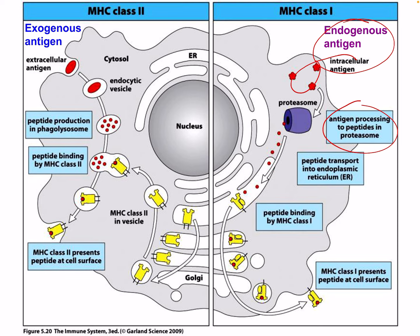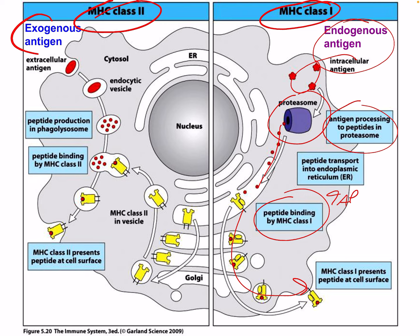Here again is the big summary figure: intracellular antigen processing to peptides in the proteasome, peptide transport into the endoplasmic reticulum by TAP, peptide binding by MHC using the peptide loading complex, and then the MHC molecule presented on the cell surface. That covers MHC class 1. Next time we'll be looking at MHC class 2 and the exogenous antigen process. I hope you learned something — it's pretty interesting. See you next time.